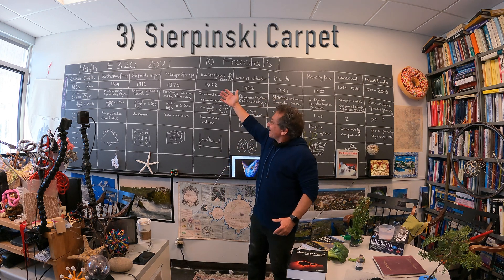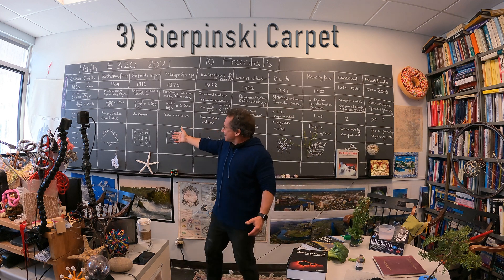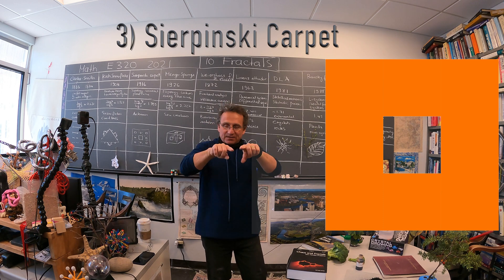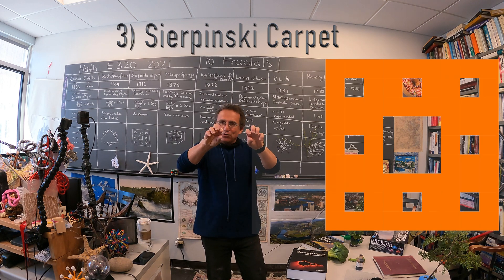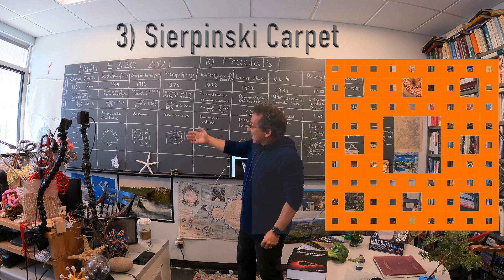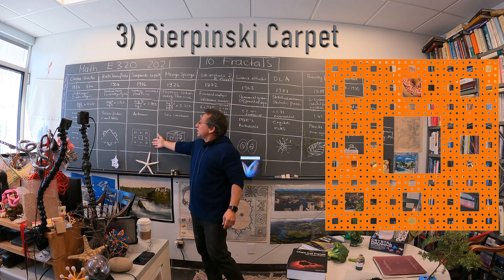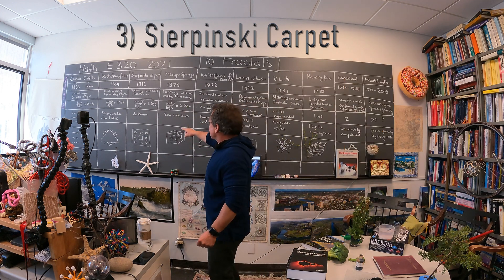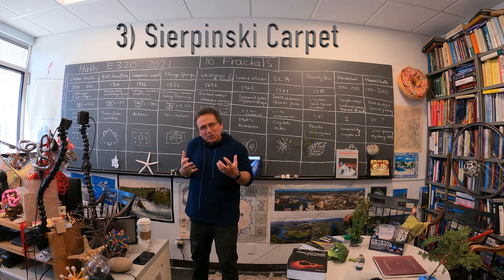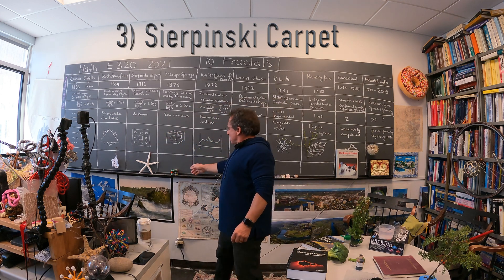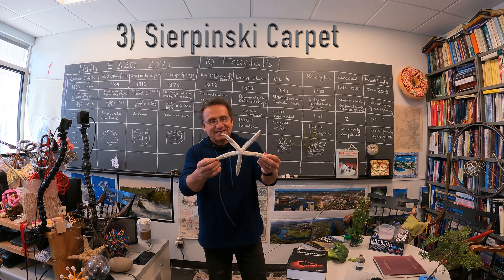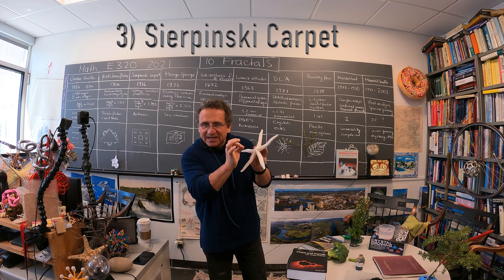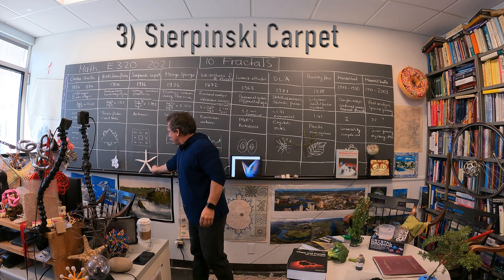The Sierpinski carpet is very nice too. It is obtained by taking a square and cutting away the middle square, then doing that for each of the remaining squares — like the Cantor set but in a two-dimensional version. The dimension is between 1 and 2, so it's not quite two-dimensional. Creatures you see in the sea, like the sea star, have this structure: there are holes, and then holes within each part that had no hole before.